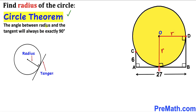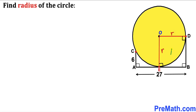Now let's recall the circle theorem: the angle between the radius and the tangent will always be exactly 90 degrees. In our case, OD and OE are the radii, and these are our tangent lines, so these angles are each 90 degrees. We can now see that EBDO is a rectangle, so OD must equal EB. Since OD is r, EB is also r.